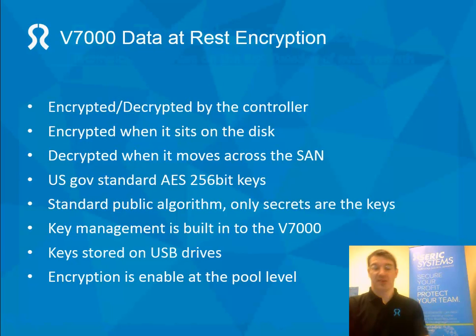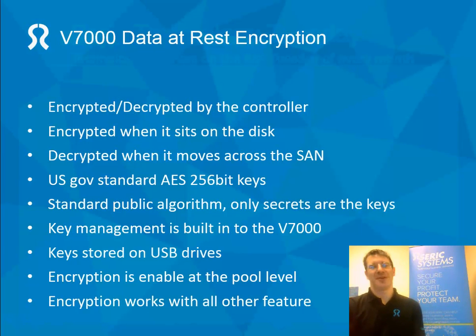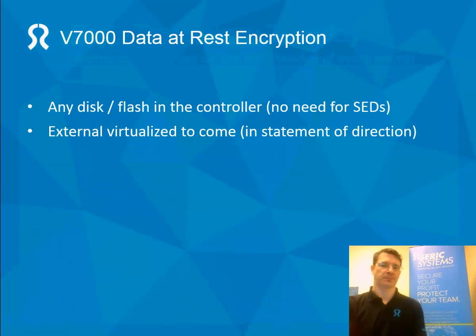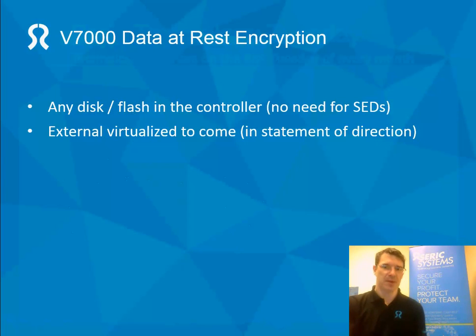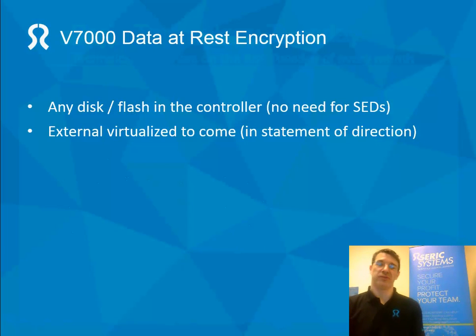The reason encryption is done at the pool level is so that EASY-T continues to work. EASY-T uses SSD and spinning disks in the same pool, and as data moves around between them it remains encrypted. Encryption works with all other features — EASY-T, compression, and node degradation all continue to work. Encryption applies to any disks or flash drives in the controller; you don't need to purchase self-encrypting drives. However, it only covers disks in the actual V7000 controllers and expansion units — externally virtualized storage, such as EMC disks managed by the V7, cannot currently be encrypted. There is a statement of direction indicating external virtualization encryption is coming.